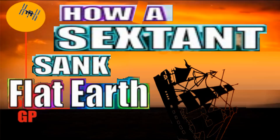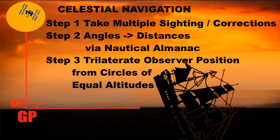G'day everybody, Where's Wally here. It seems Mitchell still isn't understanding the three steps required to do celestial navigation on a globe. Step one: you have to take a sighting — he seems to have that bit down pat. Step two: you have to look up the value of the distance to the GP of the target in the nautical almanac. Step three: you use trilateration to determine the location of the observer using three or more distances to known positions of the GPs. That last step, Mitchell is still a little hazy on.